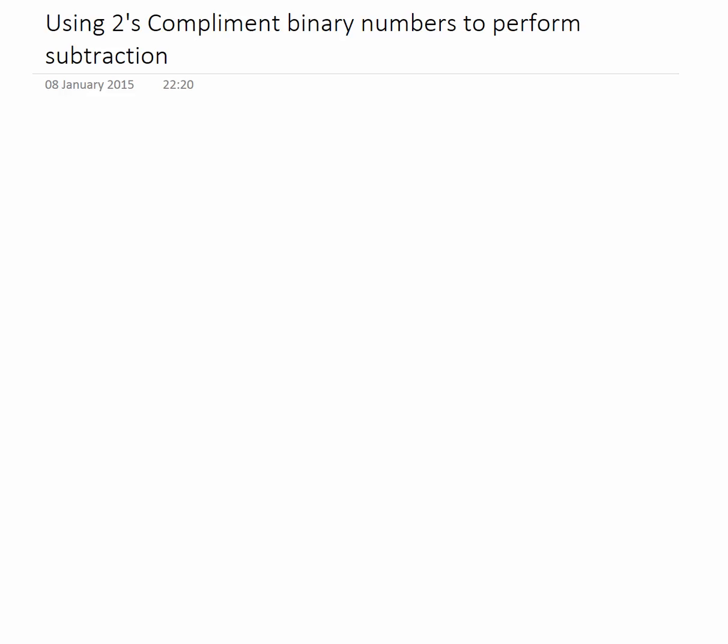If we consider what we know from normal maths, if we had something like 7 minus 3, we could say that was 4. And if we had 7 plus negative 3, we know that is also equal to 4. Therefore, if we had a way of easily creating negative numbers in binary, we can use addition to effectively perform subtraction.